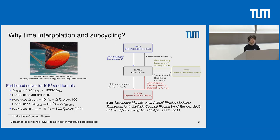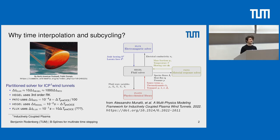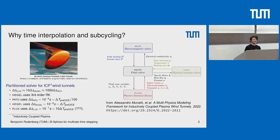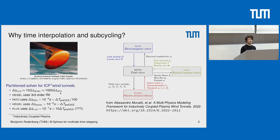The electromagnetic solver has the largest time step size, living on the coarsest scale. The fluid solver lives somewhere in between, and the material response solver is on the smallest timescale. They couple the Pato and Hegel solvers using preCICE every time window, but one solver does many steps within one window and the other only does one. The third solver, marked with question marks, doesn't even communicate with preCICE every time window, but only every 10 windows. They obviously need three different timescales to avoid using the smallest time step on all solvers, which would be very costly.